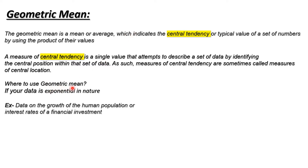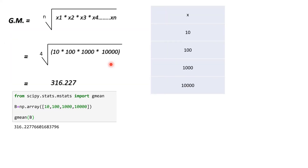Where can we use the geometric mean? When your data is rising exponentially. For example, human population is rising exponentially. Another example is the interest rate of a financial investment — when you invest money in a bank, your interest rate will rise exponentially. In these cases you can use the geometric mean.